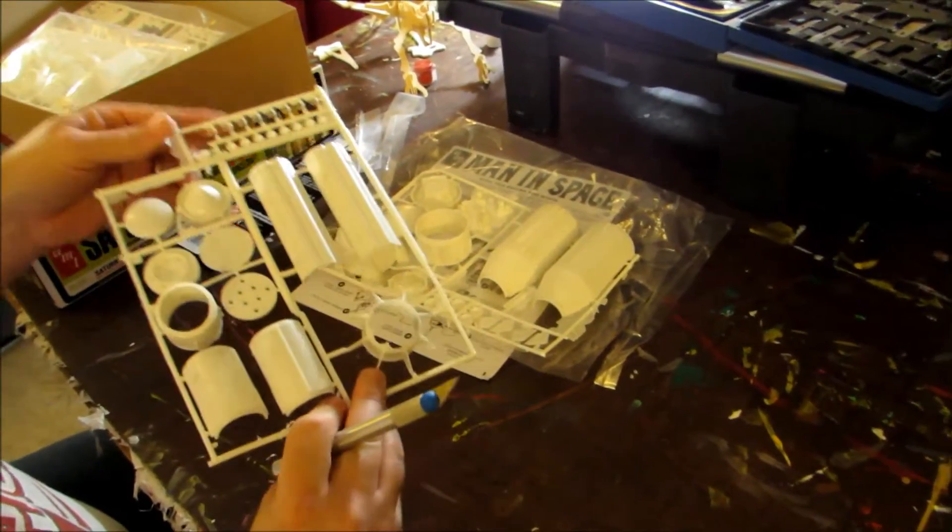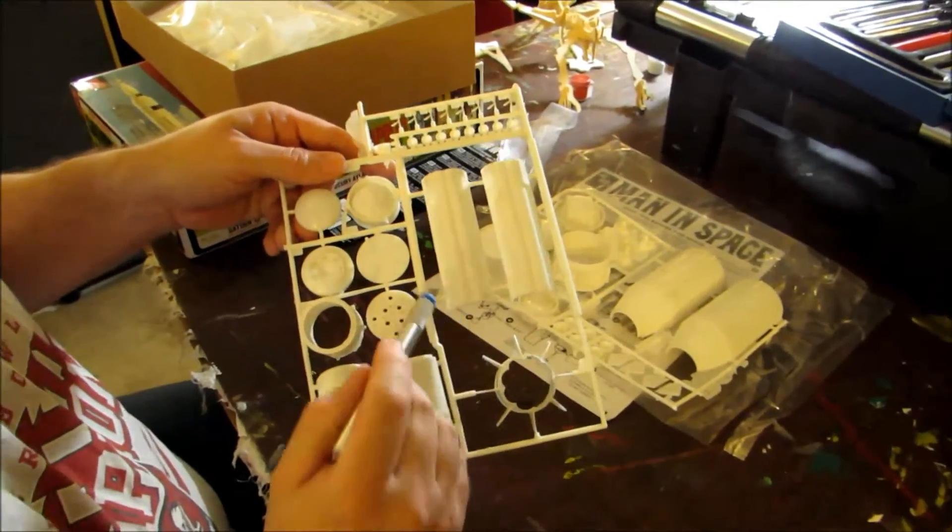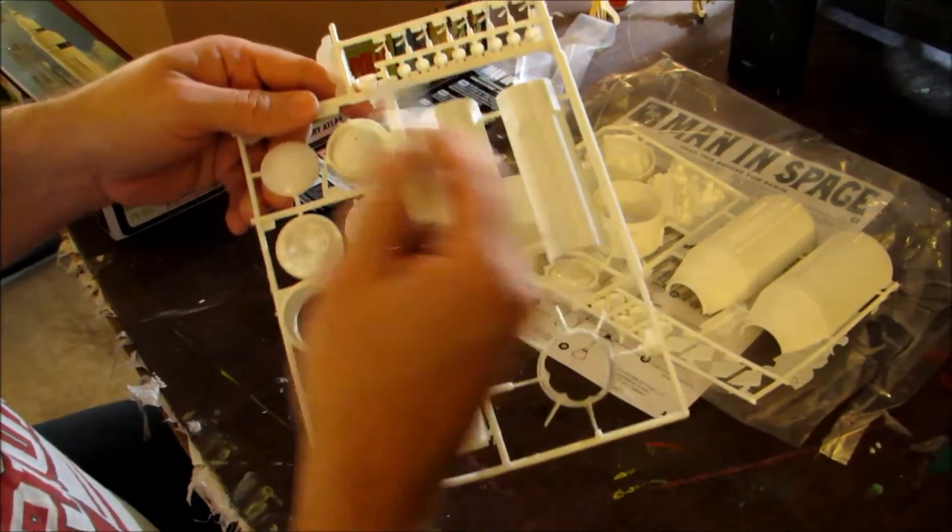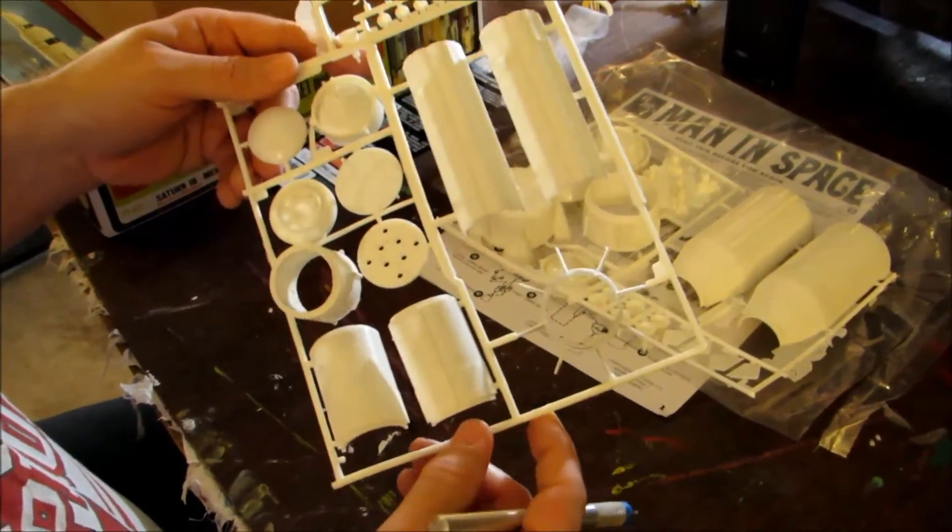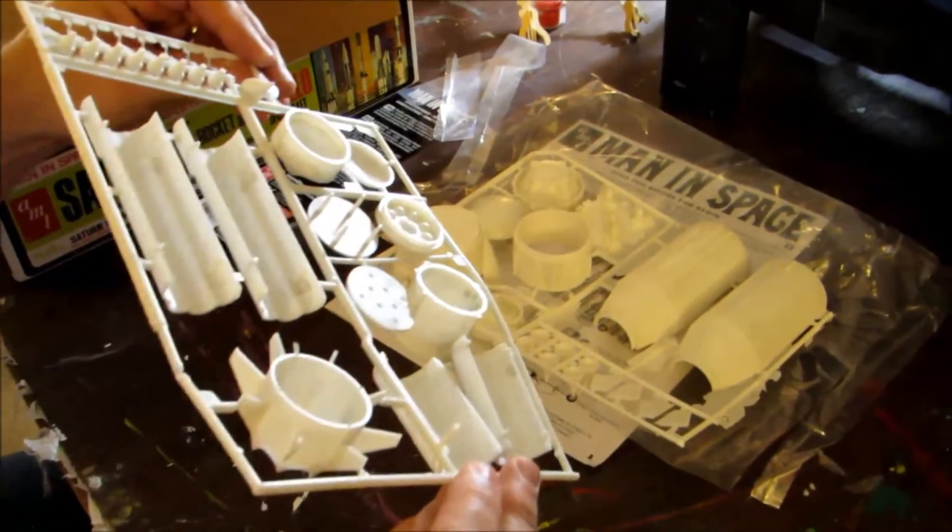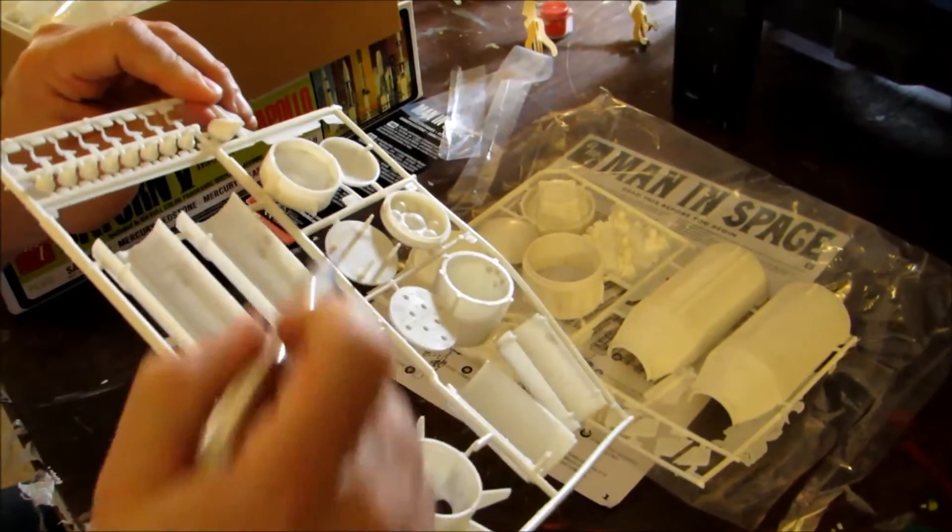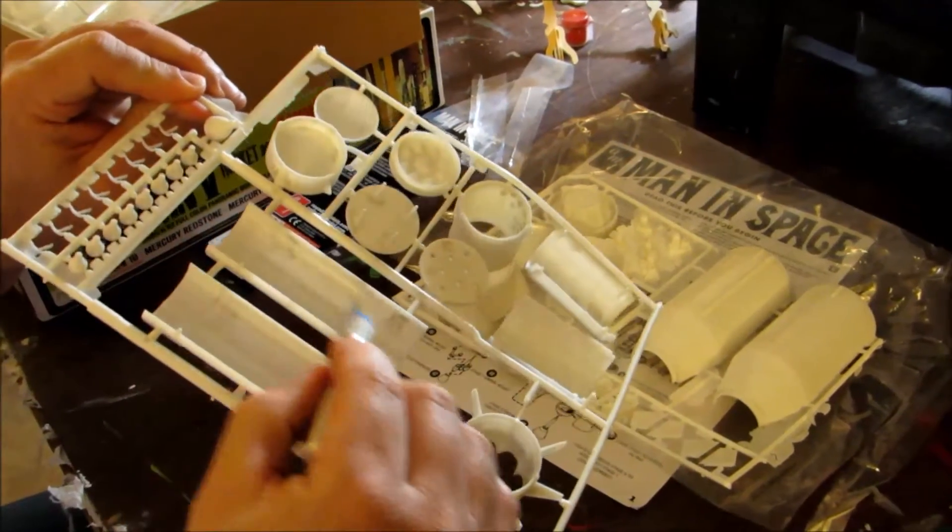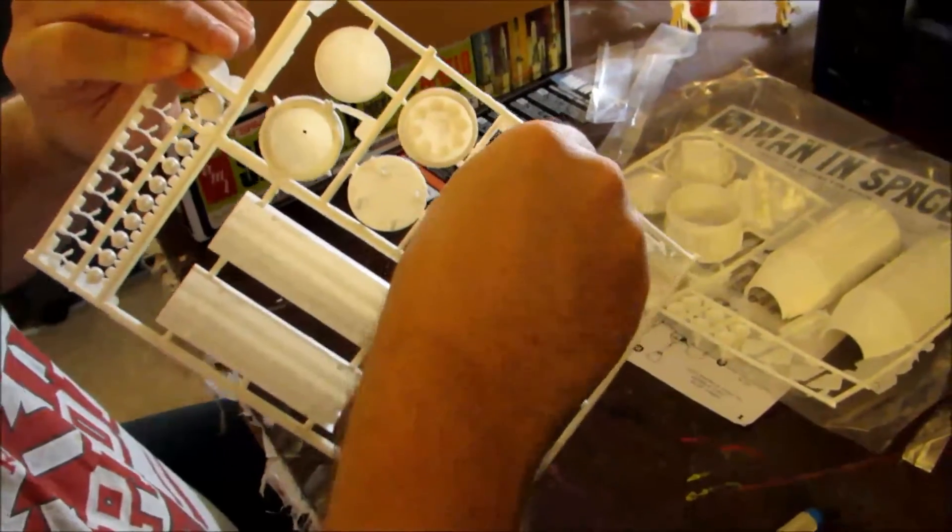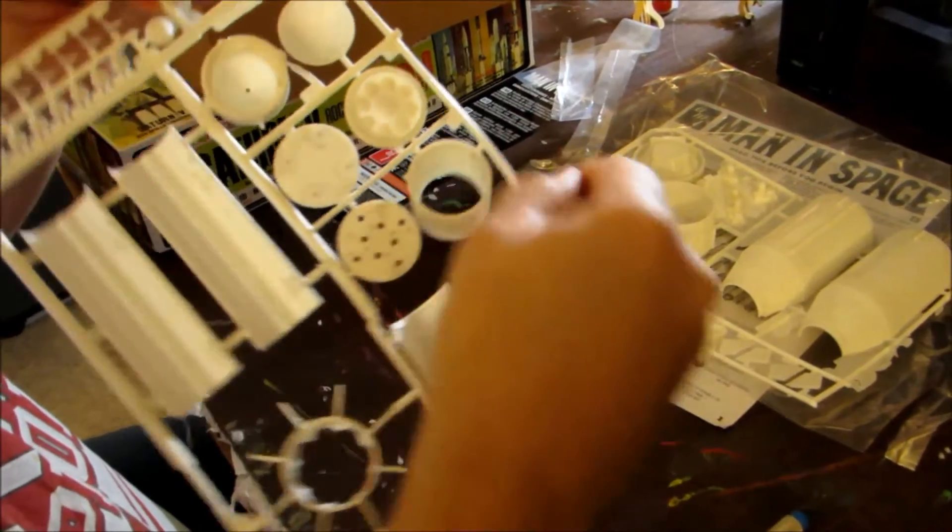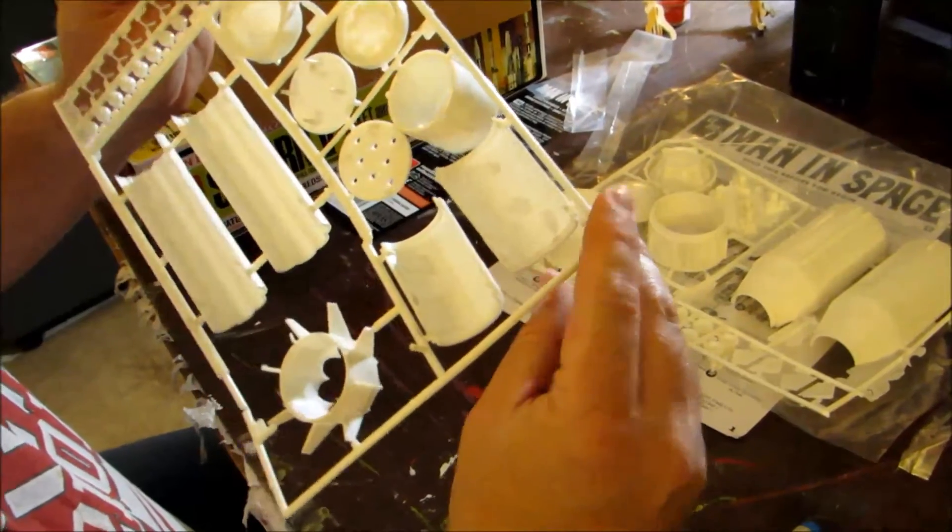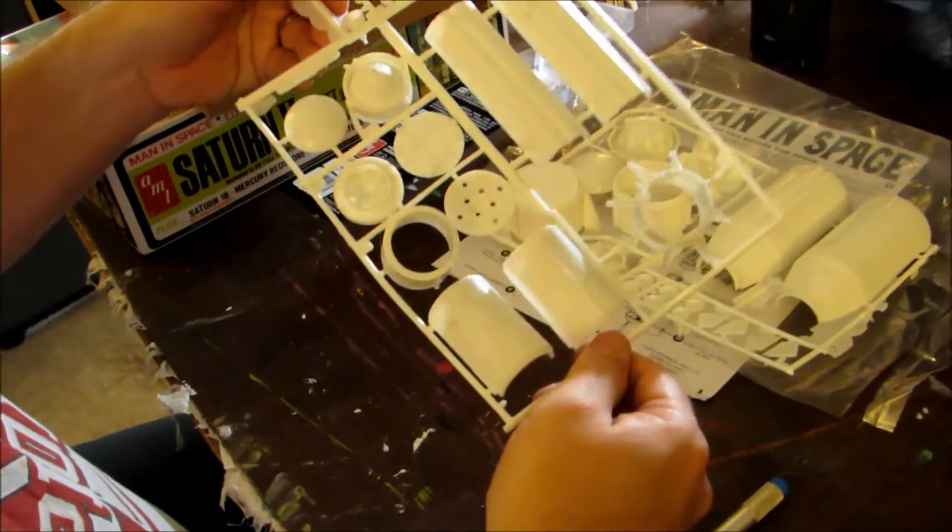And here you are with the Saturn 1B. First stage of the 1B. Obviously the stages that attach with it. A little bit of discoloration on this one. As you can see here. It might be just with this particular. It might be with just the way this particular one came out of the molds. But, that's the way it is.